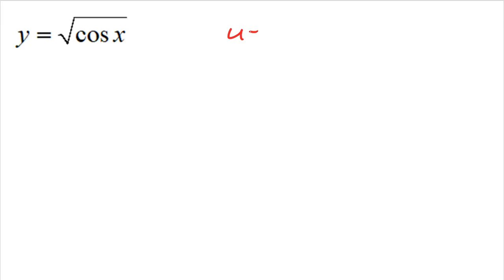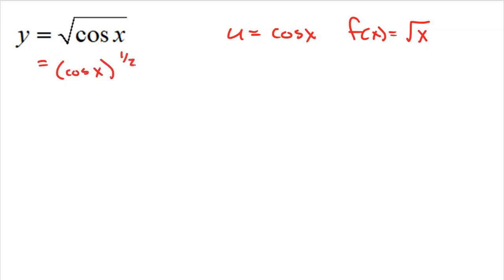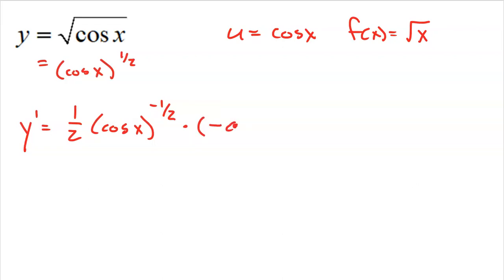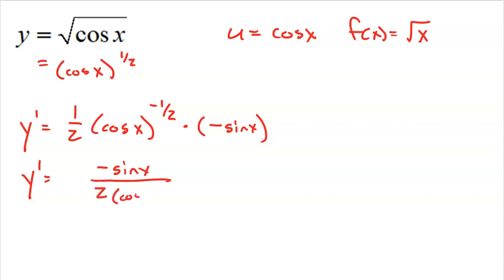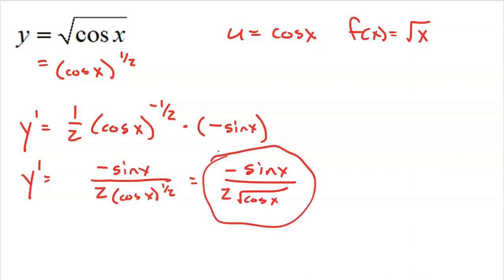Here is another one: u is cosine of x, inside the square root of x. Rewriting as cosine of x to the one-half, the chain rule gives: one-half falls down, the inside stays the same, new power is negative one-half, then multiply by the derivative of cosine, which is negative sine of x. Cleaning up: numerator is negative sine of x, denominator is 2 times cosine of x to the one-half, which you can rewrite as 2 times the square root of cosine of x. That's the final derivative.